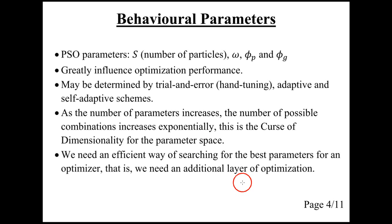In addition to the parameters omega, phi p, and phi g, the PSO also has a parameter s, which is the number of particles in the swarm. The choice of these parameters greatly influences the performance on optimization problems.